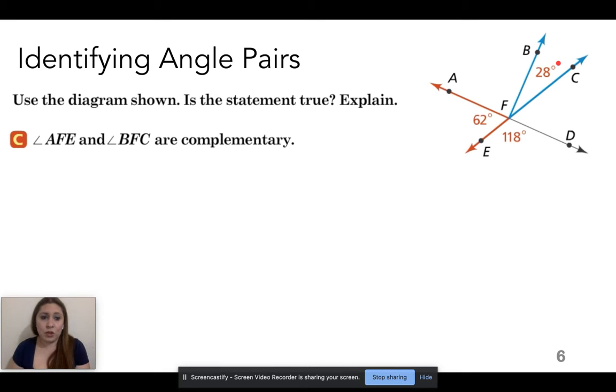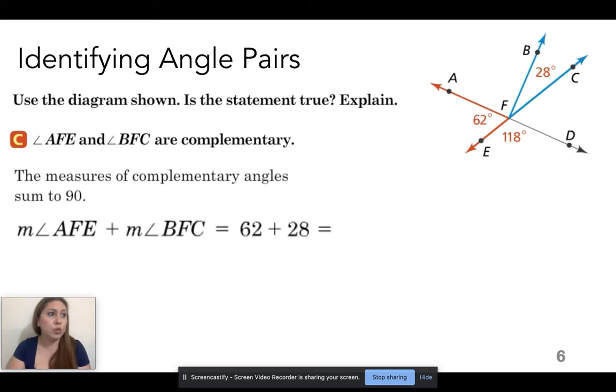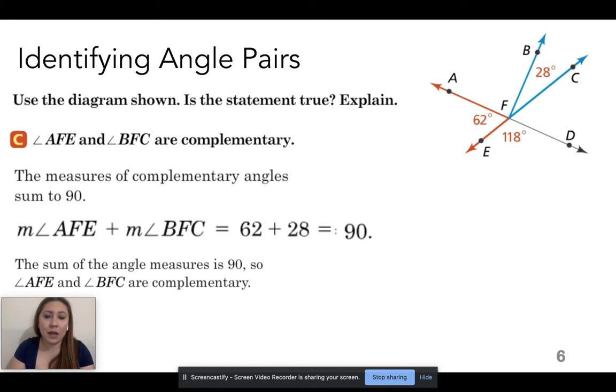So angle AFE and angle BFC. So we're dealing with the 62 and the 28. Are those complementary to each other? So think back. What does complementary mean? It means that it adds up to 90 degrees. So if I take 62 plus 28, does that give me 90? It does. So are they complementary? Yes, since I can add both of them, even though they are not right next to each other.